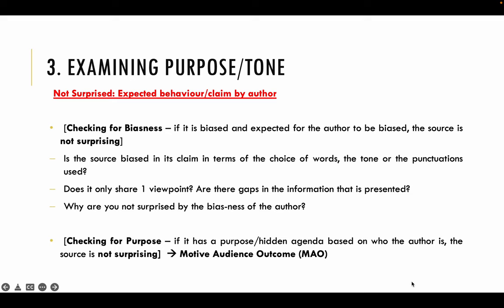When you check for purpose, a lot of students always just like to say that they're not surprised because the source-giver has a purpose, or has a hidden agenda, and then just stop there. But it's not enough to just stop at saying he has a purpose or a hidden agenda. You must tell me exactly what is the person's agenda — what is the person trying to achieve? So ask yourself: who's the author? What's the motive? What's the audience? What's the outcome? Basically, it's like you're doing inference of purpose. Use the structure you use to answer inference of purpose to structure your argument for surprise or not surprise at highest level, if you're considering purpose as a method.